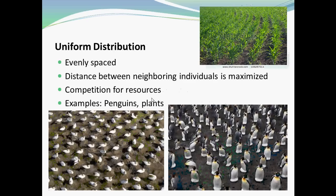Uniform distribution is when organisms are evenly spaced. The distance between neighboring individuals is maximized, and competition for resources is quite high. Penguins are a good example — they sit an equal distance apart because when sitting on their eggs, they are very aggressive and protective, maintaining at least a meter's distance so each can raise their young comfortably. Corn and bean fields are also a good local example, where planters are set to precisely space seeds at an optimal distance so each plant has sufficient resources and produces a good crop.